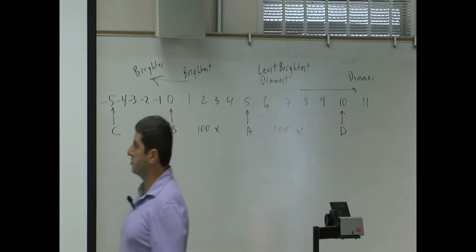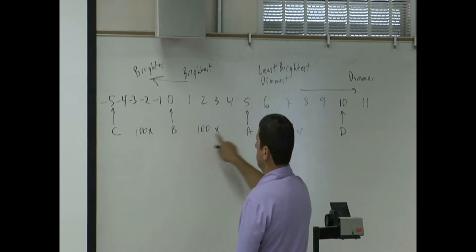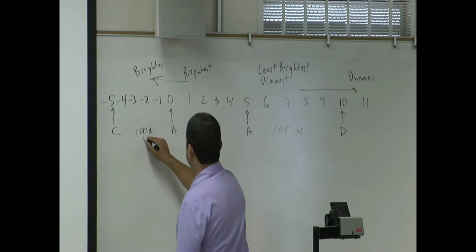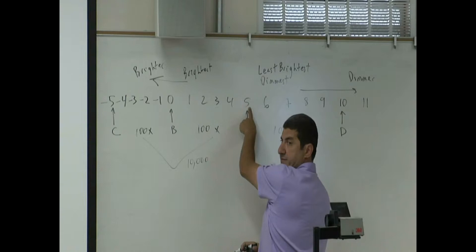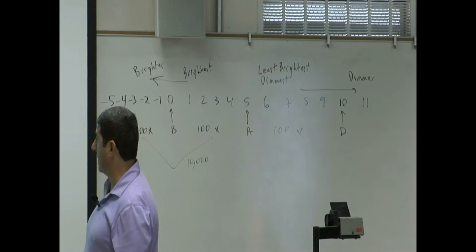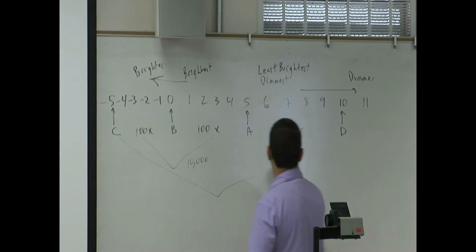So star C is 100 times brighter than B. Star B is 100 times brighter than A. And if I want to know how much brighter this guy is than that, 100 times 100 gives you 10,000. So if a star is rated negative 5, he is 10,000 times brighter than a 5. And 1 million times brighter than a D. Why? 100 times 100 is 10,000, 10,000 times 100 is 1 million. So star C would be a million times brighter than D.